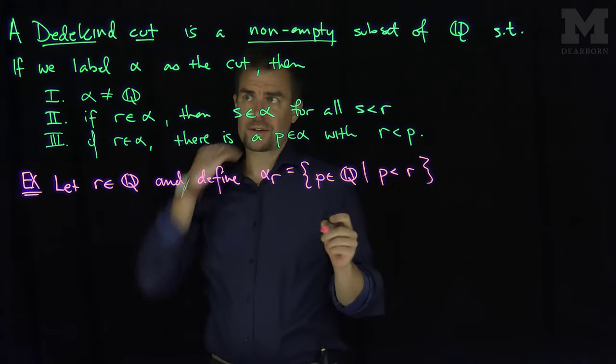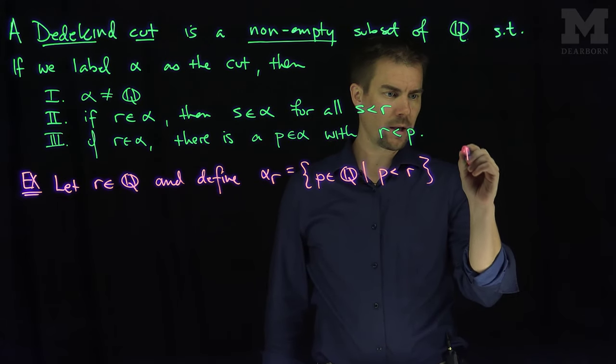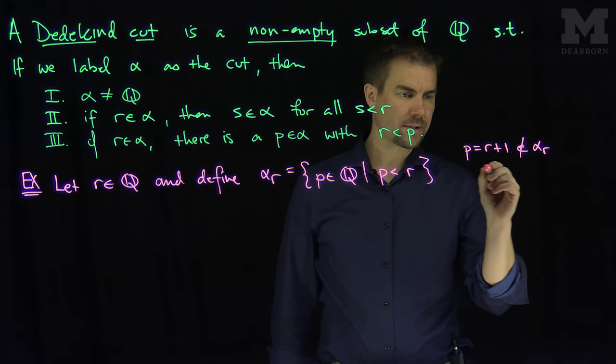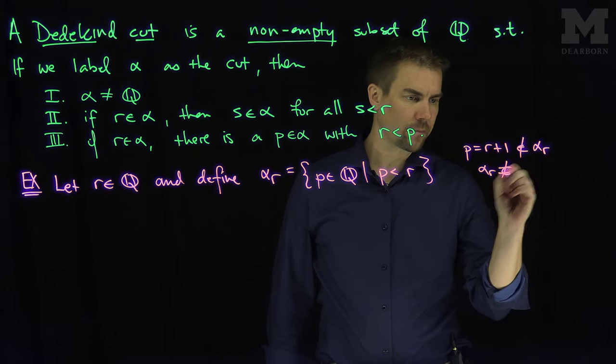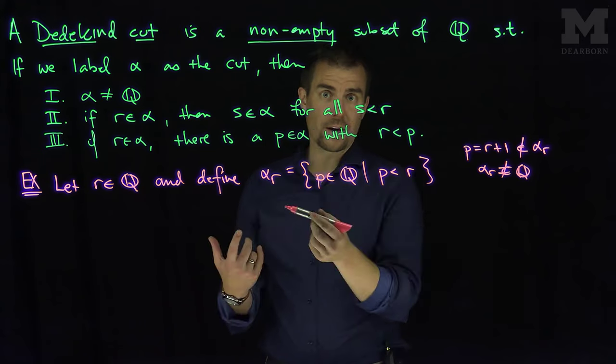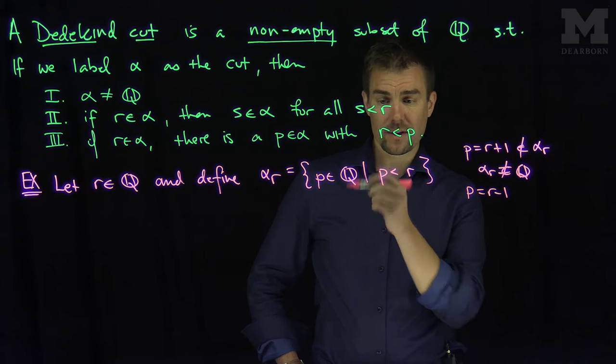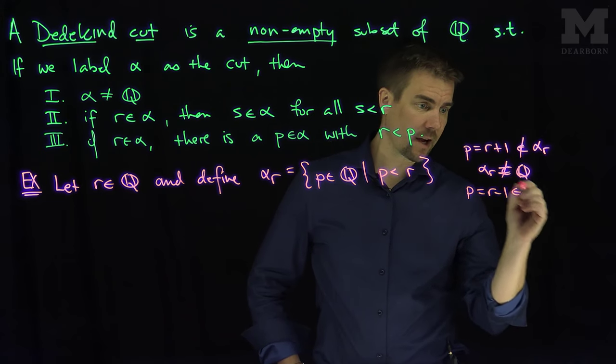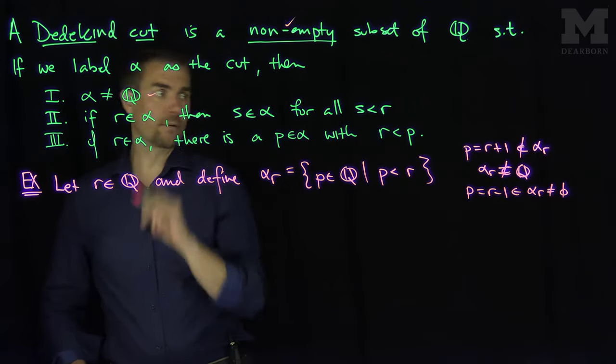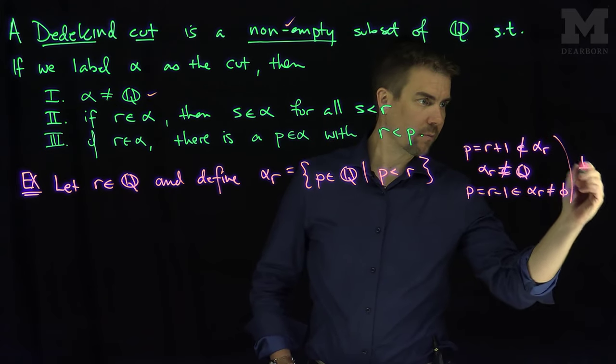The first thing to observe is that since R is a rational number, P equals one plus R is not in this cut alpha R, and that tells us that alpha R is not equal to the entire set Q. Furthermore, there are infinitely many rational numbers that are less than a fixed rational number. If I look at P equals R minus one, we can see that R minus one is actually a rational number that's in the cut alpha R. So the cut is not empty. So I have a non-empty set that's not all of Q, so properties one and two are true. This is the proof of property one.